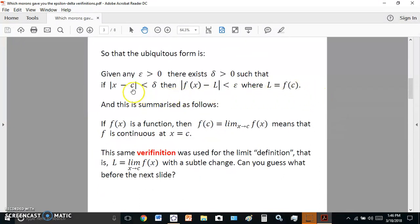So the ubiquitous form is this. Given any epsilon greater than zero, there exists delta greater than zero, etc. And it's summarized as follows: If f(x) is a function, then f(c) equals the limit as x approaches c, meaning that f is continuous at x equals c. So this same verafinition was used for the limit definition. And just with a subtle change in it, can you guess what it is before the next slide? And by the way, if I'm going a little too fast for you, it's because I only have a fixed amount of time. So you can always hit the pause button on the video to read the entire slide. So any guesses? Nope. Okay.